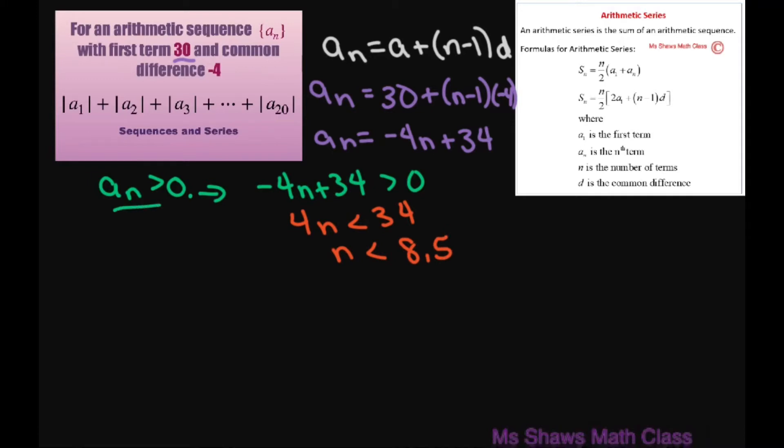That means when a_n is positive, the first 8 terms are positive and the negative numbers start at term 9.